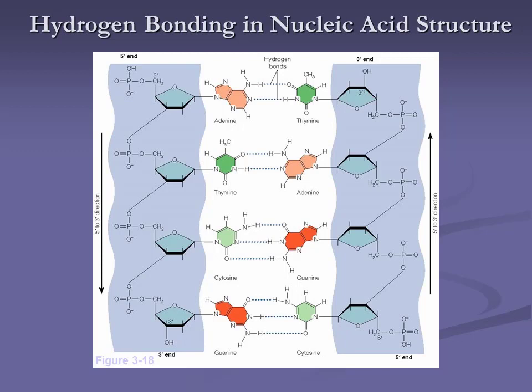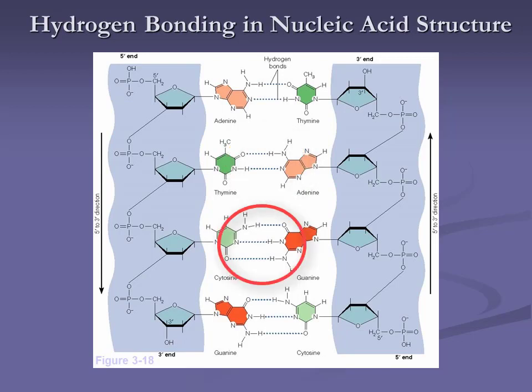The hydrogen bonding is not equal. There are two hydrogen bonds between the A-T pair, and three between the C-G pair. More bonds takes more energy — so more bonds means that connection is stronger. When working with our DNA, when you have a lot of C-G sequences together, it's going to take more energy to separate those. A lot of A-T together, it's going to be easier.